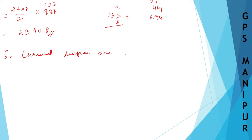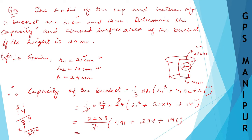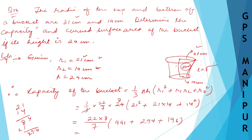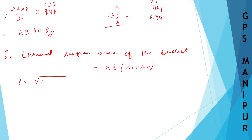The curved surface area of the bucket is given by π × l × (r1 + r2). But we don't have l — the slant height. So first we need to find l. The formula for slant height is: l = √(h² + (r1 − r2)²).